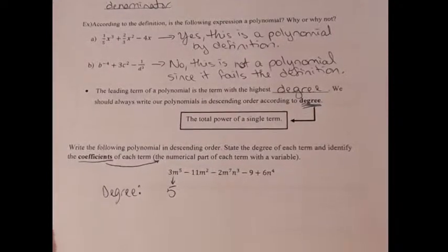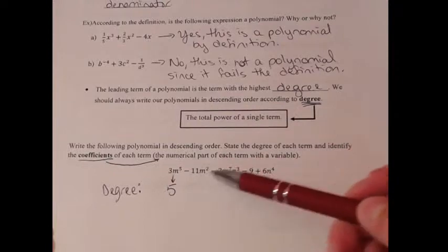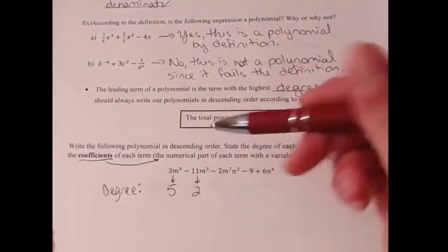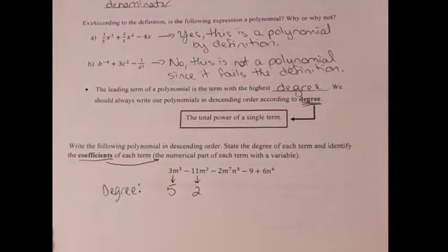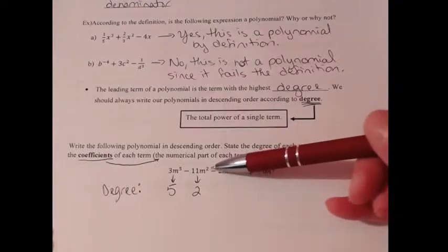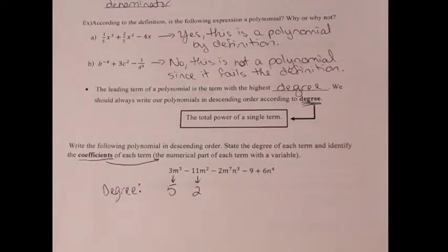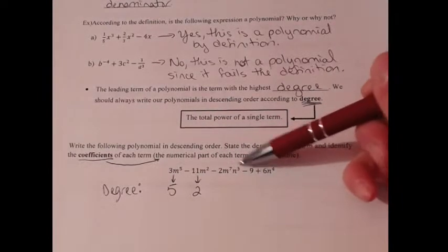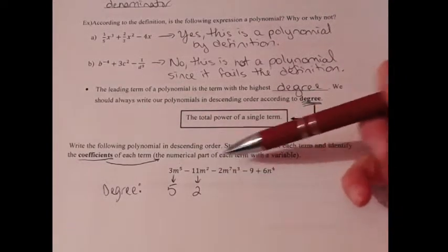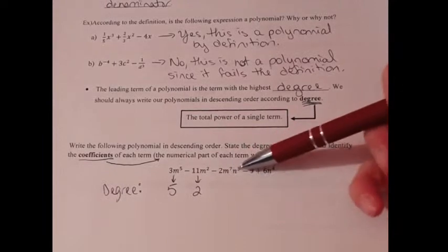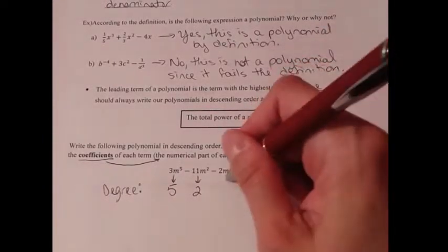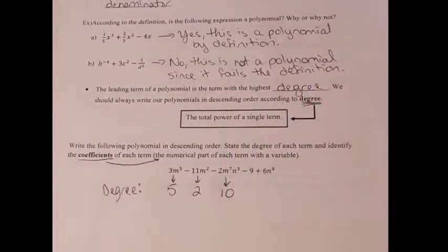Take a look at the second term: negative 11m squared. The power is two, so the degree of my second term is two. Now the third term: negative 2m to the seventh times n to the third power. Going back to the definition — degree is the total power of a single term. We have two powers: seven and three, so the total is ten. That's currently the highest degree.